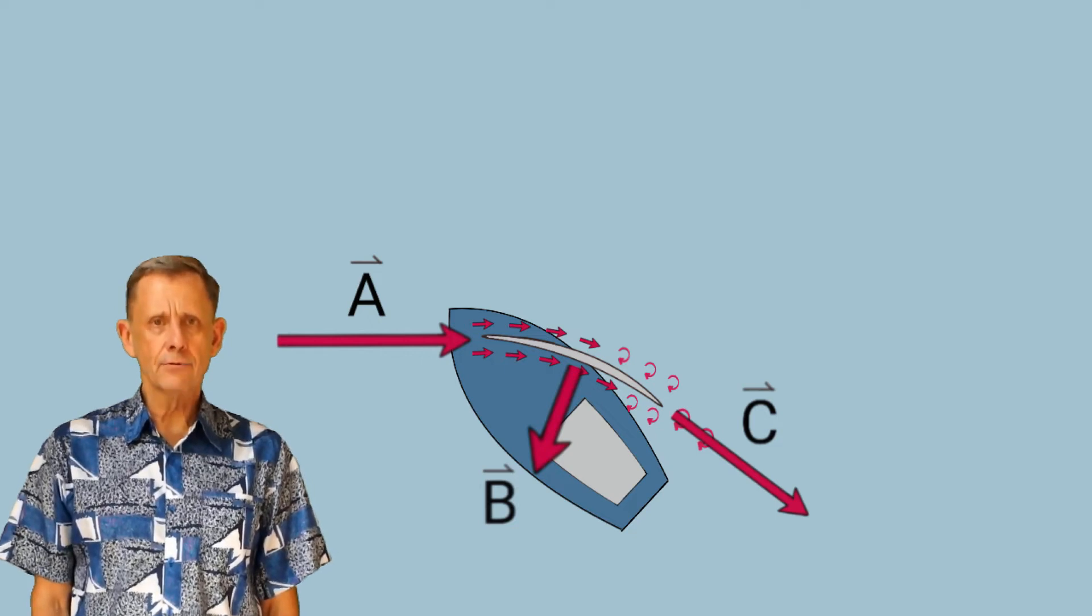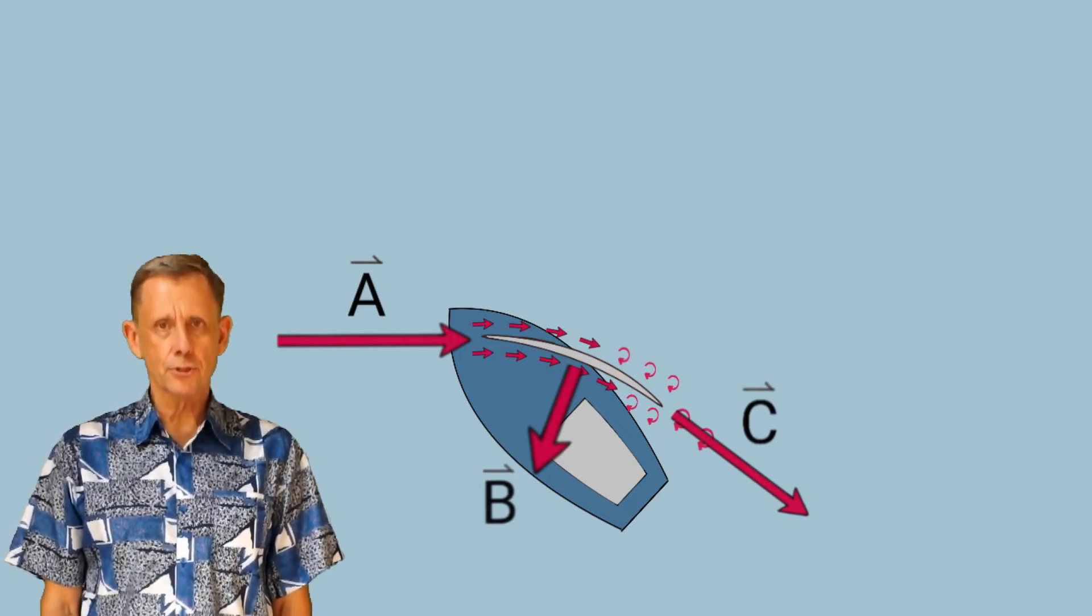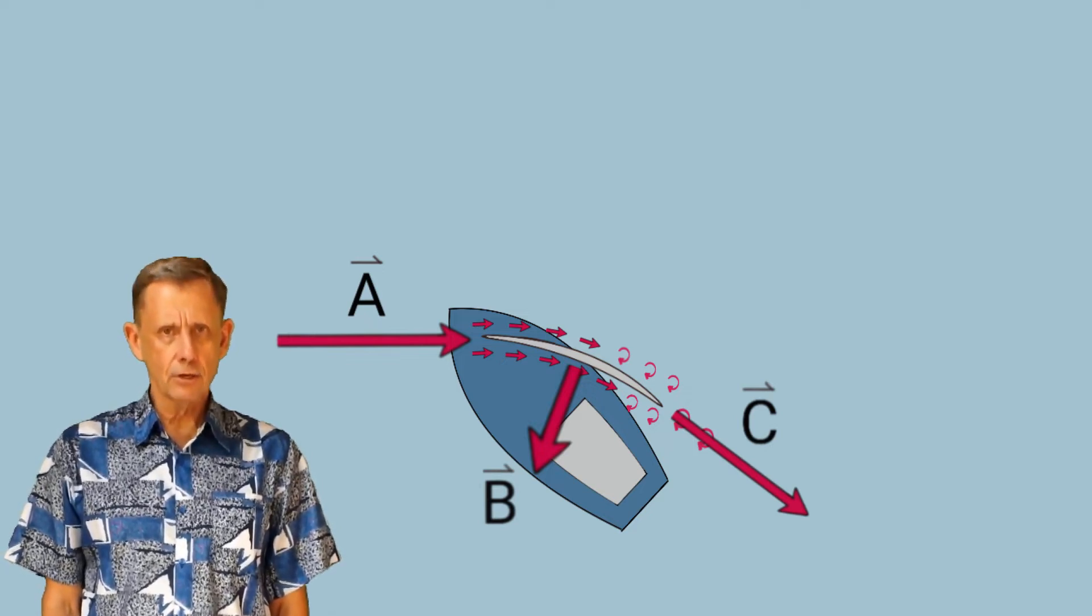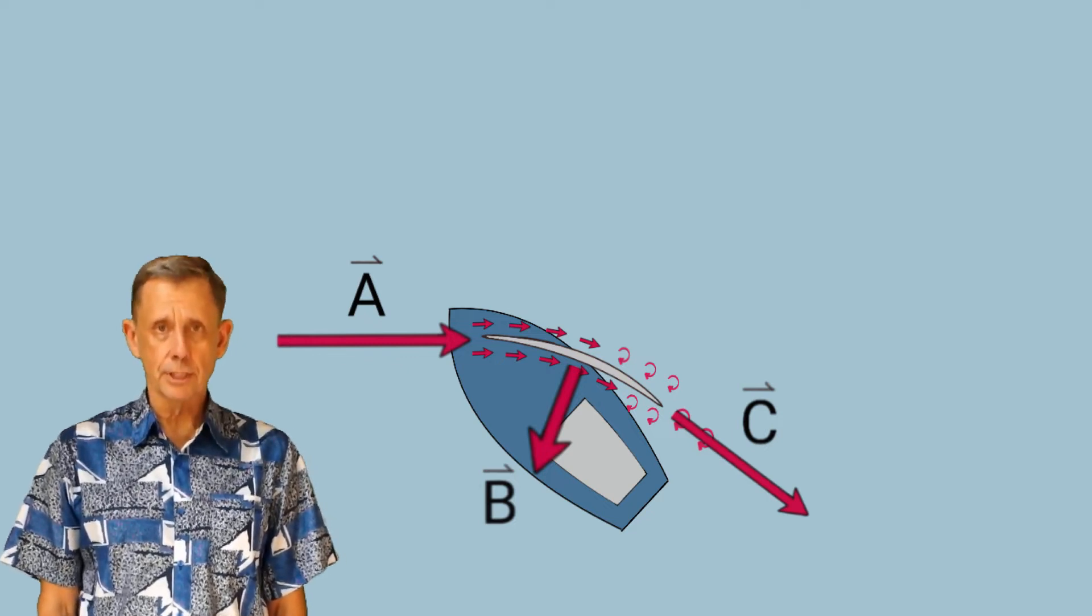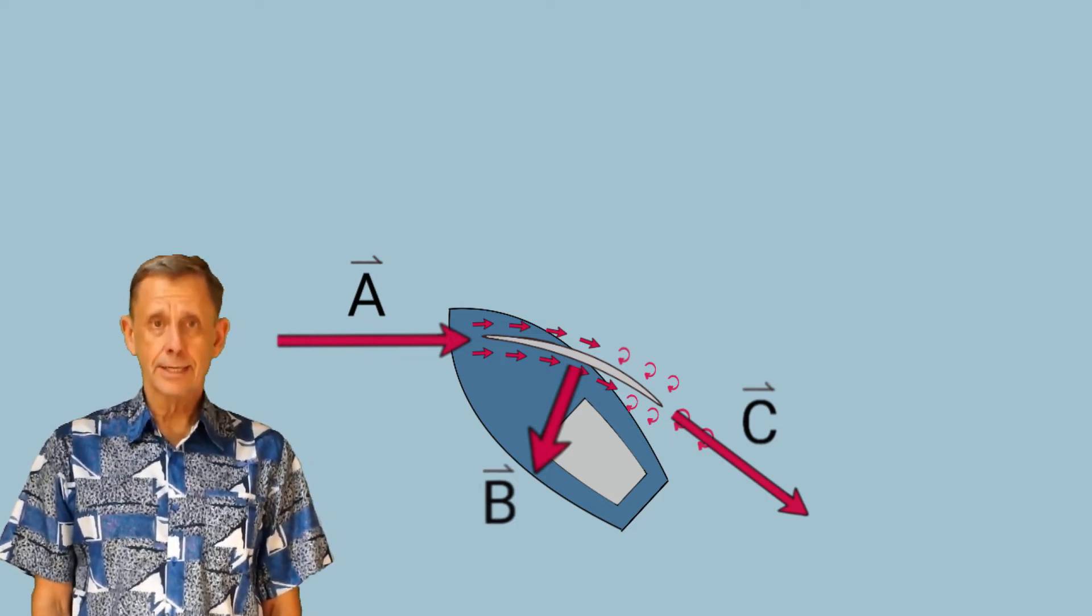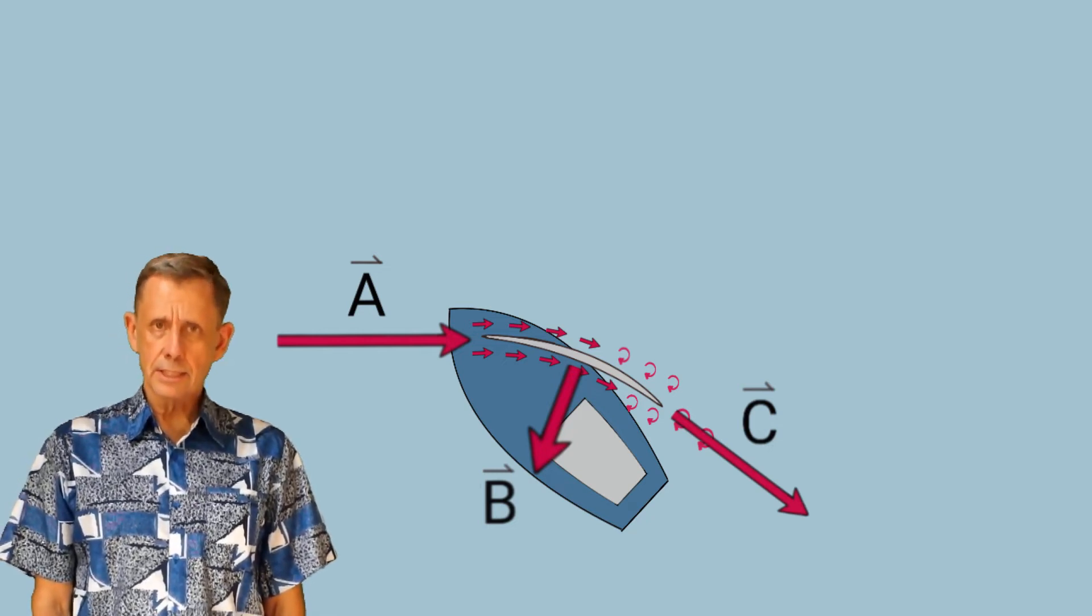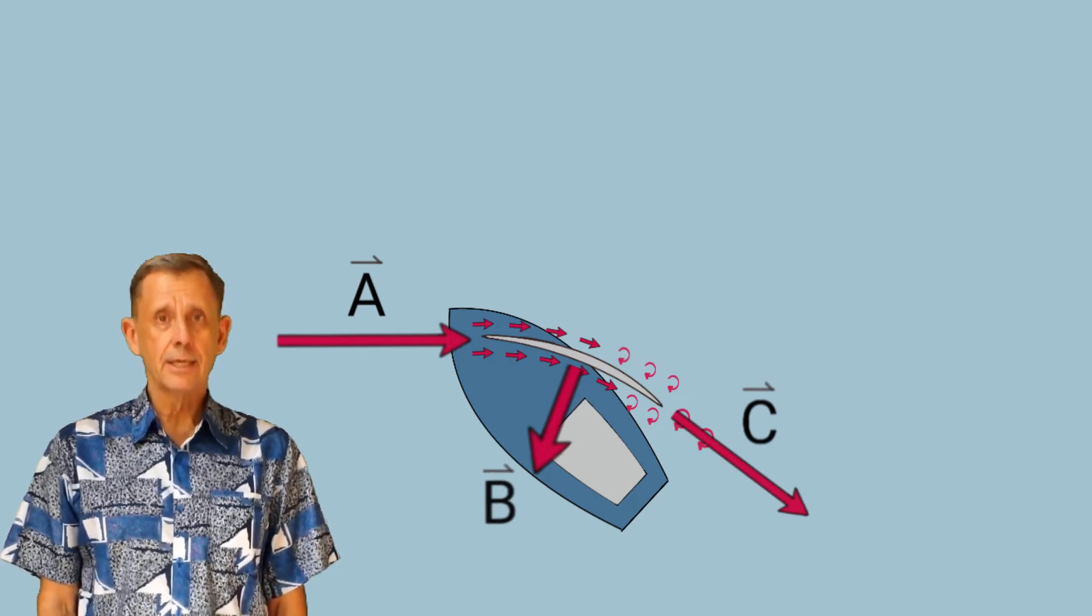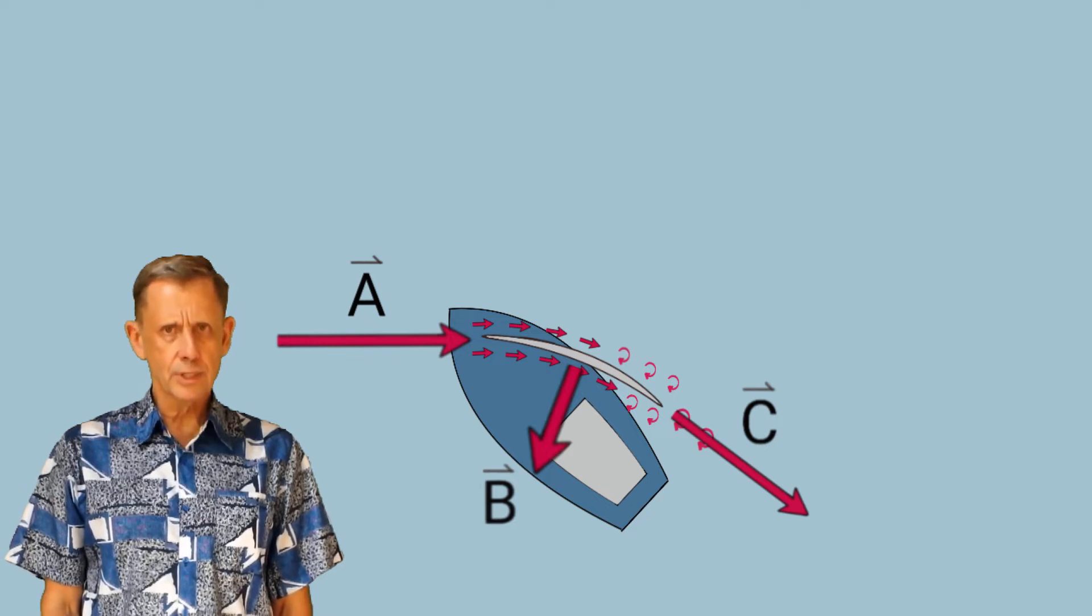But one thing I haven't talked about is the so-called venturi effect over the upper surface of an airfoil. There's an argument that the air accelerates over the top of an airfoil to generate a low pressure region that essentially sucks an aircraft upwards. And the argument continues that sails are shaped like airfoils, so it's the same venturi effect generating drive in your sails. But there are some problems with this explanation.